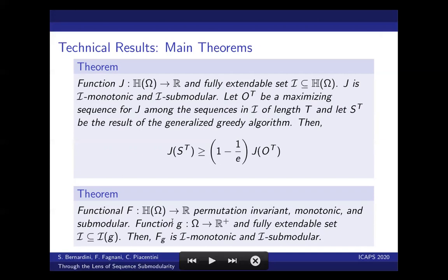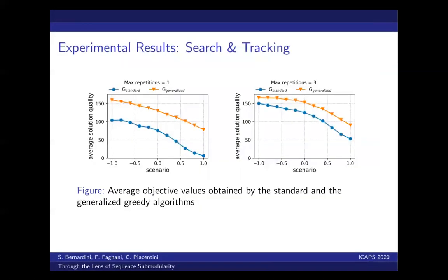And here we have the experimental results for the search and tracking problem. So you can see that the generalized greedy approach in orange dominates in all cases the standard greedy approach. And the impact is higher when we have the case of patterns that have higher timestamps that also have higher detection probability.